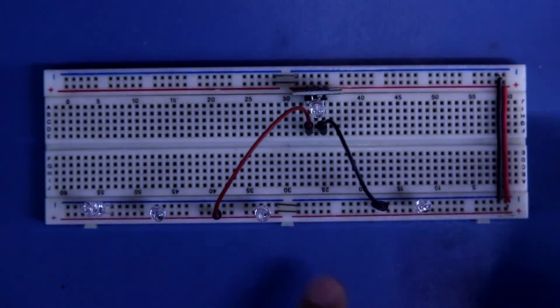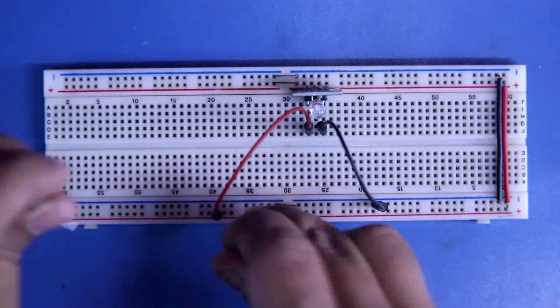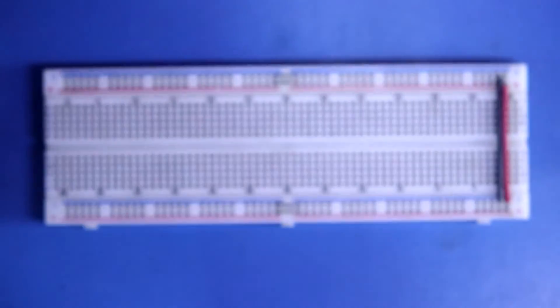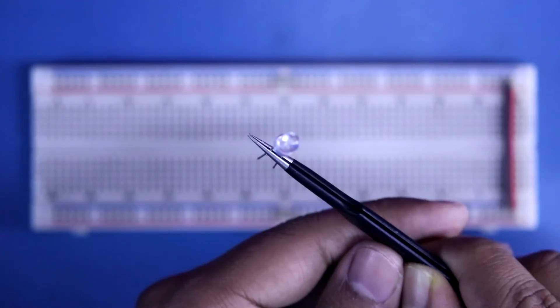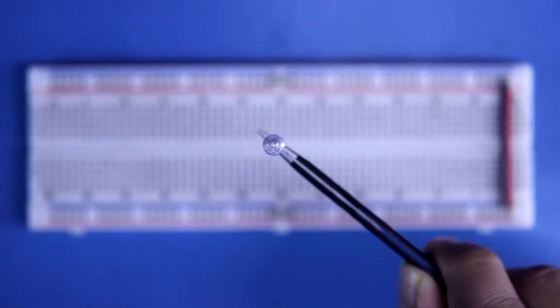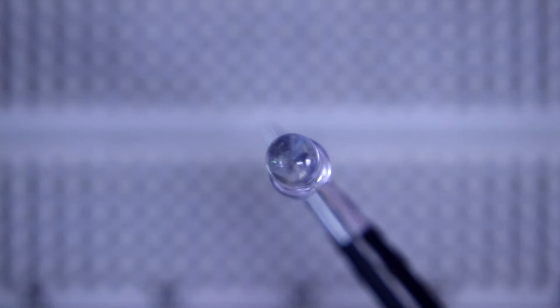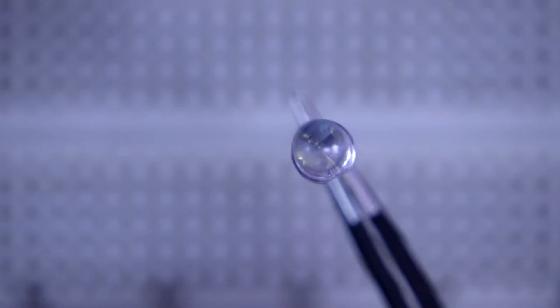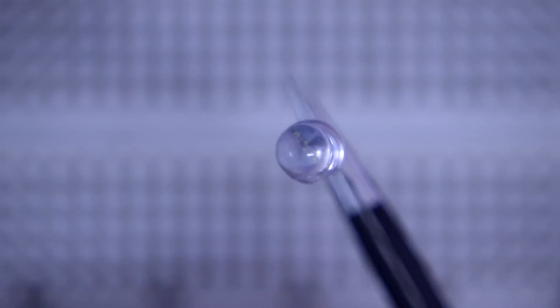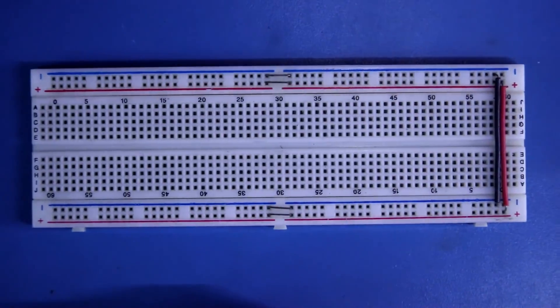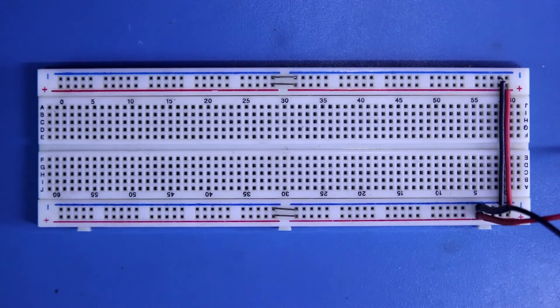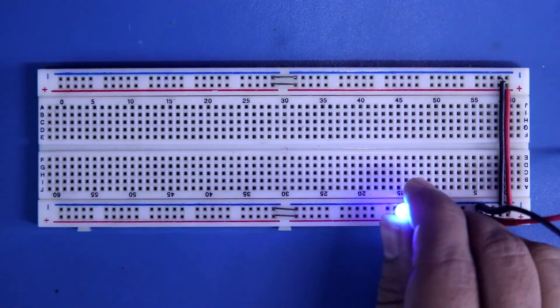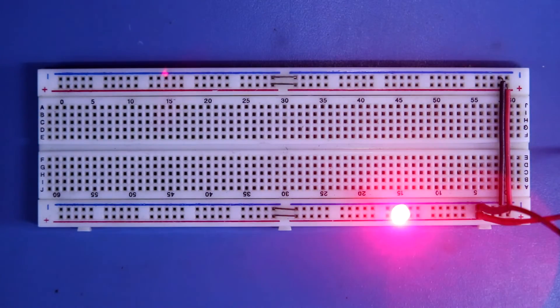Now I will show you another type of automatic LED. This LED also has the IC. Now let's check it. This is toggling between red and blue.